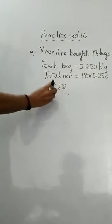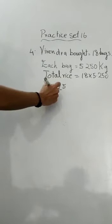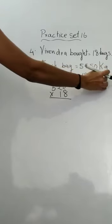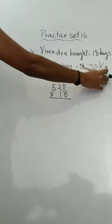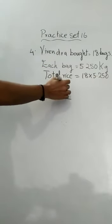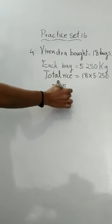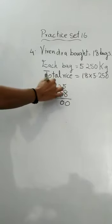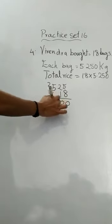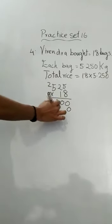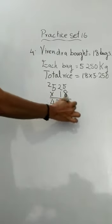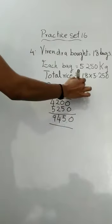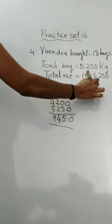You can write this as 525 into 18, ignoring the trailing zero since it has no significance. Multiplying: 5 eights are 40, carry 4; 2 eights are 16, plus 4 gives 20, carry 2; then continuing the multiplication gives 9450.